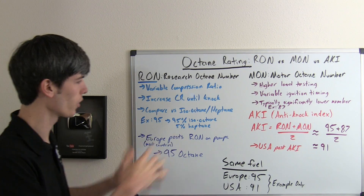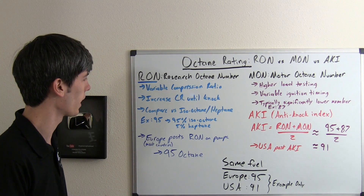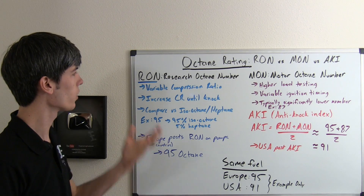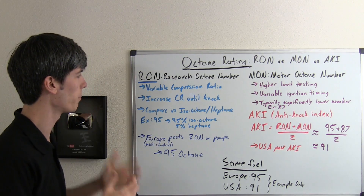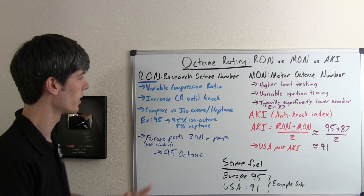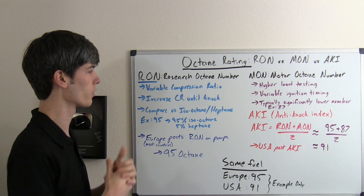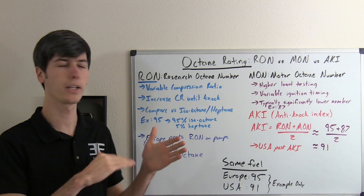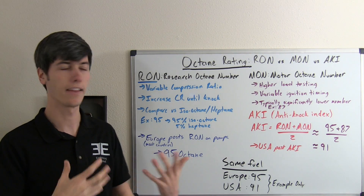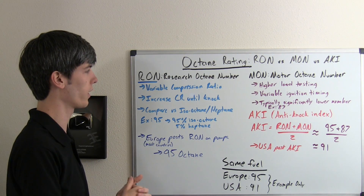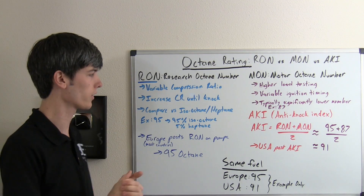Apologies as there are no fun pictures to look at, but it is an important topic and pretty simple to understand. So let's talk about RON first. RON is the research octane number. Basically, there's an engine with a variable compression ratio, and you increase the compression ratio until it begins to knock, then you measure where it knocks, and that gives it its octane number.